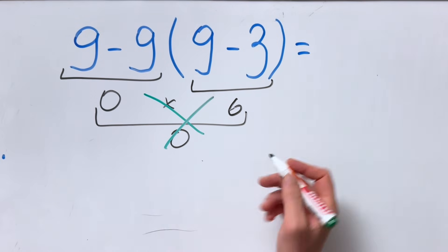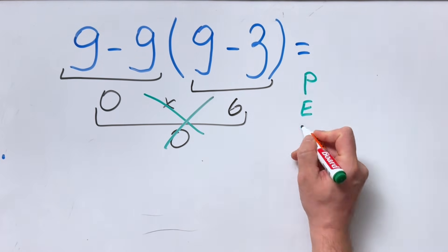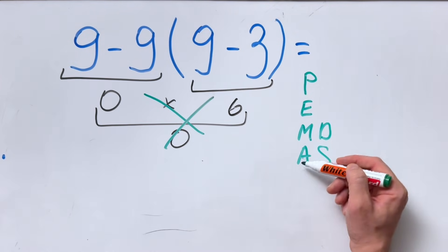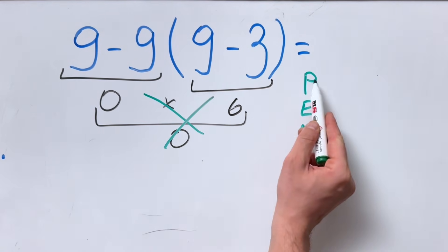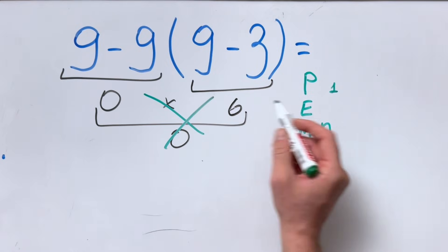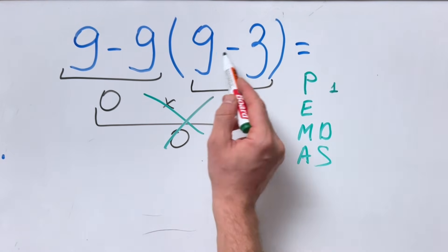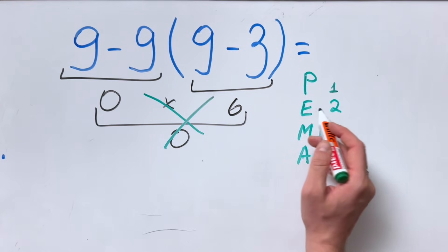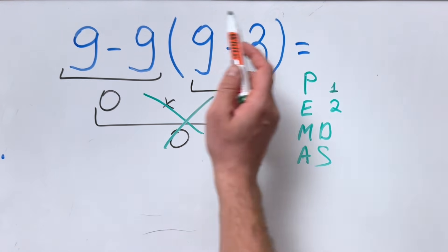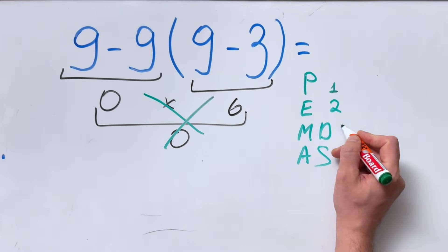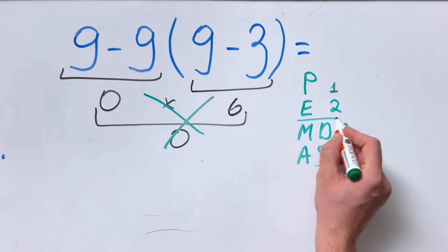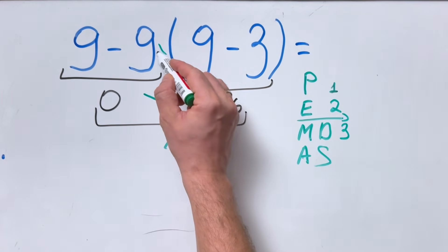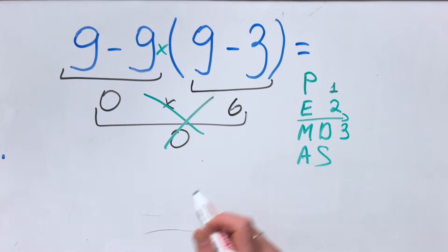Why is this answer not correct? Because according to the order of operations, which is PEMDAS — or 'Please Excuse My Dear Aunt Sally' — we must first do what's inside the parentheses. So first we must do 9 minus 3. Then we do the exponents; in this case, we don't have any. Then we have multiplication and division, done from left to right. Here we have one multiplication, so we'll do it in the third place.